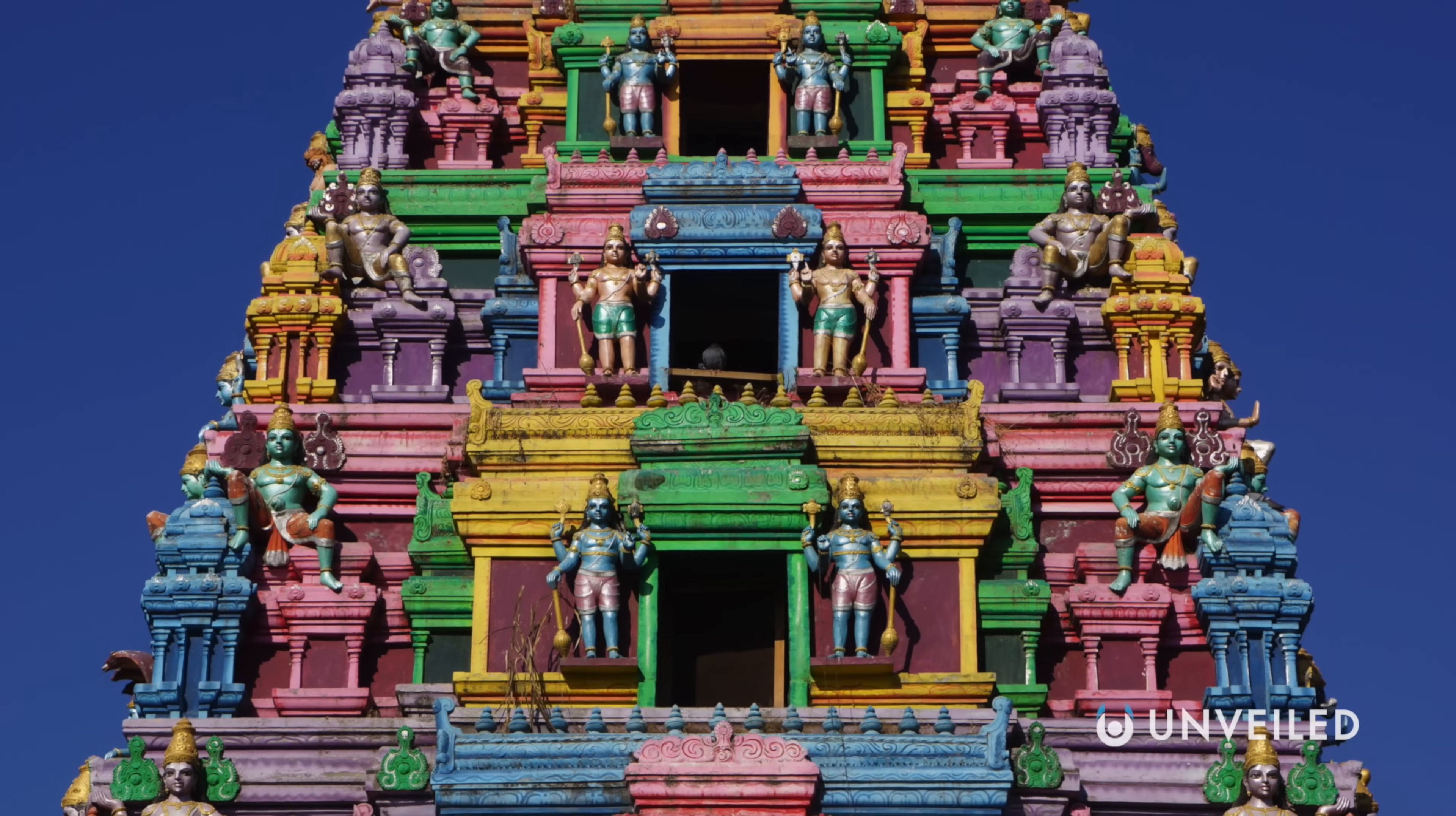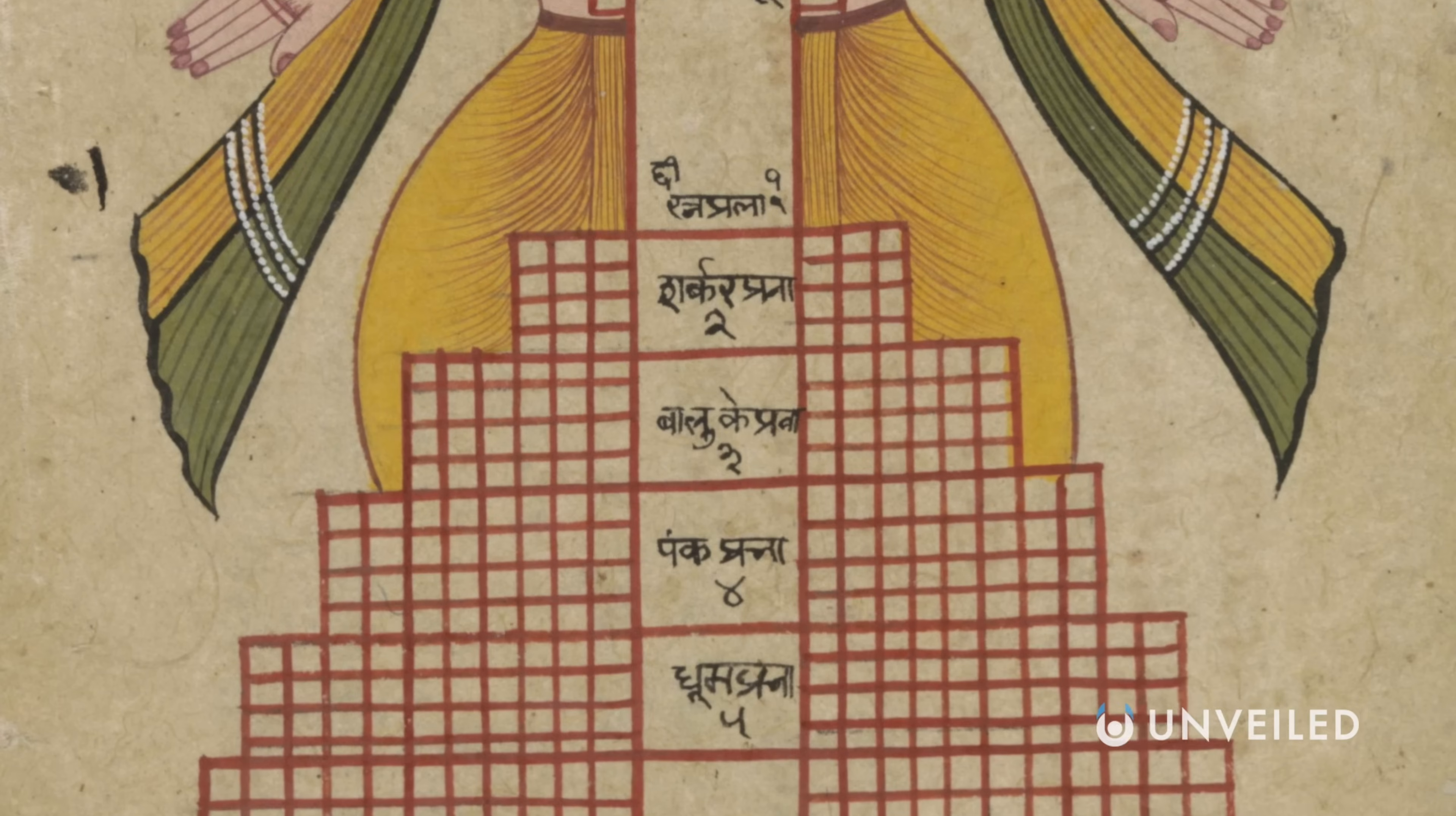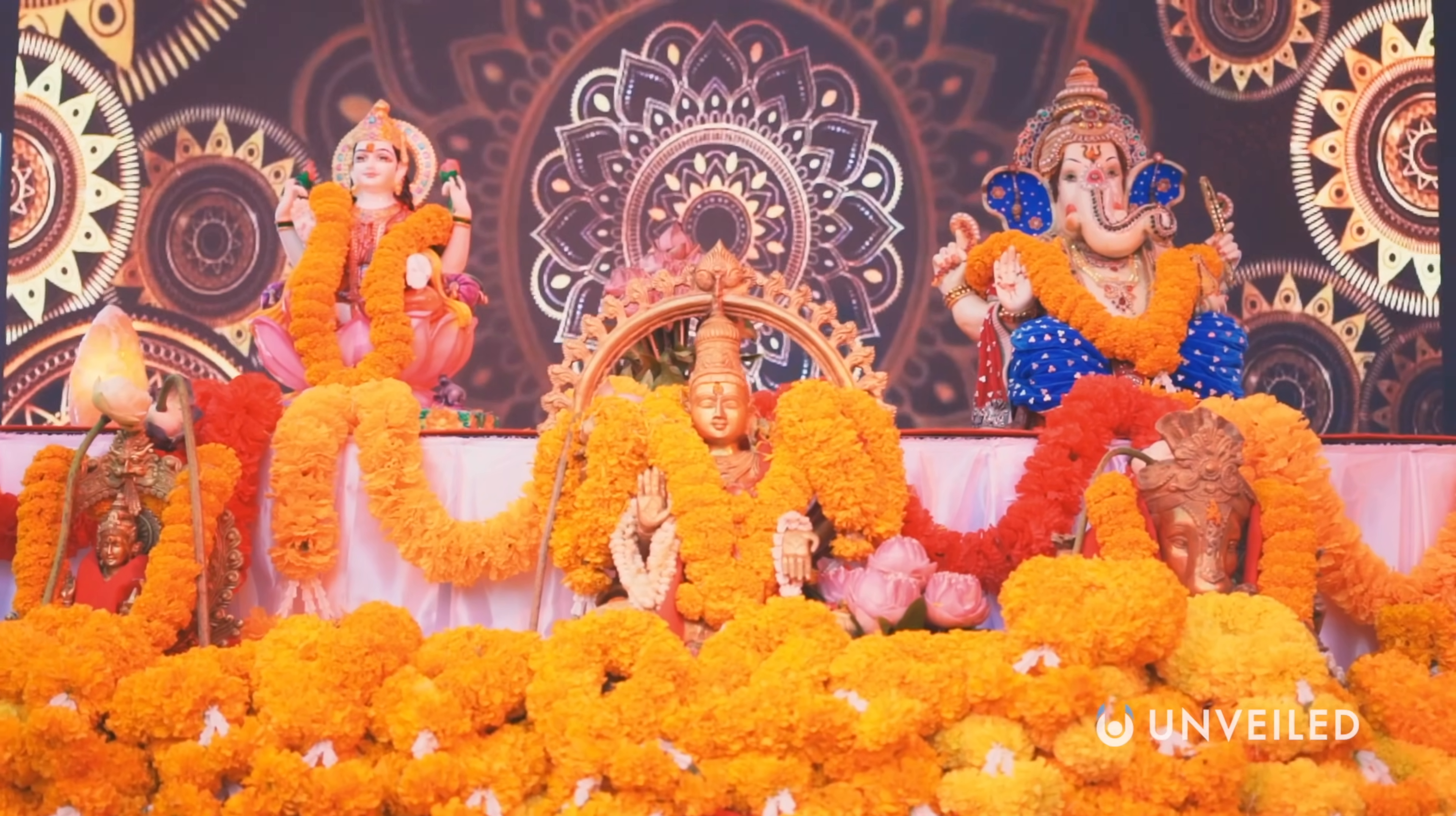Each universe is composed of Lokas, or planes of existence. The term Trailokya refers to the three worlds of earth, heaven, and hell. The Puranas then describe fourteen worlds, seven higher and seven lower. Earth is the seventh world from the highest. The highest Loka, the Satyaloka, is the home of Brahma, the creator deity.